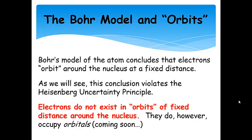Here's another thing to think about. Now, Bohr's model of the atom concludes that electrons orbit around the nucleus at a fixed distance. And we'll see that this conclusion violates the Heisenberg uncertainty principle. And it's also not possible for a charged particle to orbit around the nucleus without losing energy, and so, over time, it would lose enough energy where it would just collapse into the nucleus.